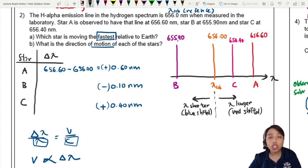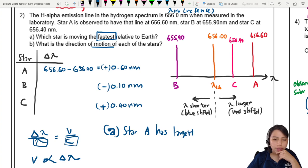Whoever has the largest change in wavelength, that star has the largest velocity. So I would say star A has the largest velocity. Star A has the largest change in wavelength, so fastest speed. It's going away from us, right? Longer, redshift. Redshift means going away. Faster speed of recession.